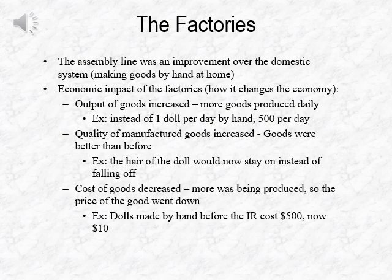An example: before, you would have one doll made per day by hand, and with about 500 workers you could have 500 made per day. Each of those dolls, made by hand, might cost $500. After the assembly line process put in place by industrialization in factories across England, the process was sped up so that 500 dolls could be made per day in a factory, and now each doll costs roughly $10.